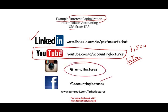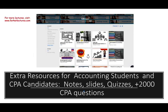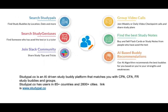This is my Instagram account, this is my Facebook account, and I do have a website. On my website, you can access extra resources for accounting students and CPA candidates, including notes, slides, quizzes, 2,000 plus CPA questions, and more. Visit the website if you are interested. Also, I suggest if you're studying for the CPA exam, there's this company called studypal.com — an artificial intelligence-driven study buddy platform that matches you with another candidate. They have users in 85 countries and 2,500 cities from LA to New York, so you can check them out.